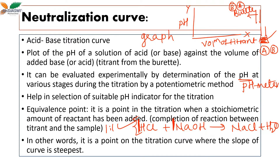In other words, the equivalence point is a point on the titration curve where the slope of the curve is steepest. Suppose I have some acid in the flask — the initial pH is quite low. As I go on adding base to this acidic solution, the pH of the flask solution will increase slowly with each addition of the titrant. The steepest part of the curve is the equivalence point — the pH of the final solution when both the sample and the titrant have completed the neutralization reaction.